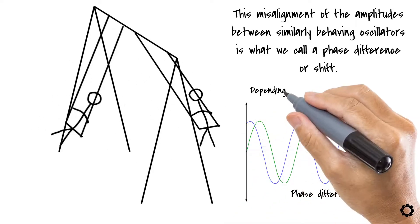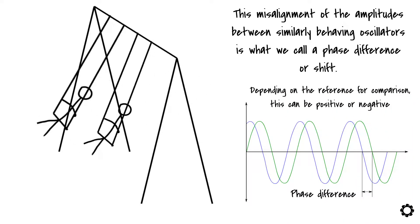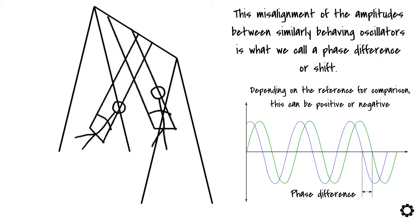In case of the swings, depending on which swing we are comparing with respect to, the leading swing would have a positive shift, or the trailing swing would have a negative shift.